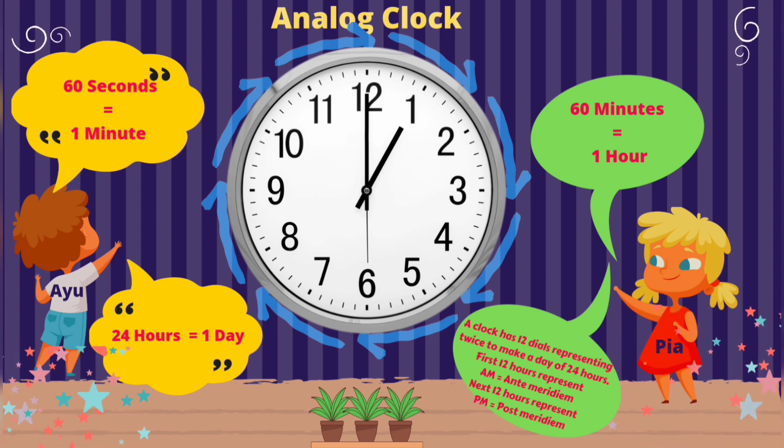First 12 hours represent AM, ante-meridiem. Next 12 hours represent PM, post-meridiem.